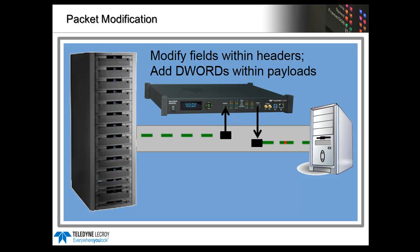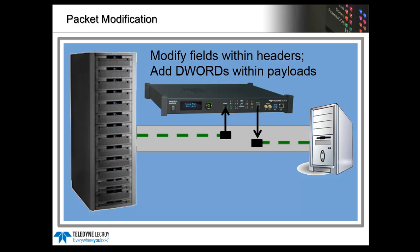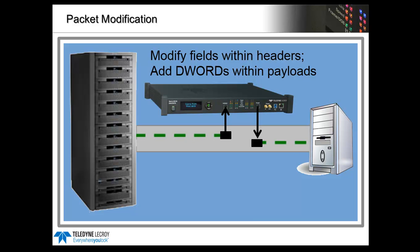On top of that, this is the only jammer on the market that can insert DWords within a frame. By extending the length of a frame, you can now intercept a response frame, change the status good to check condition, and then insert the additional sense key and sense data to simulate basically dozens of different SCSI level errors.